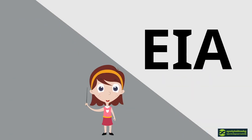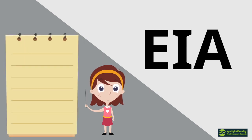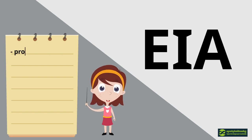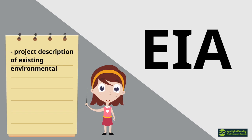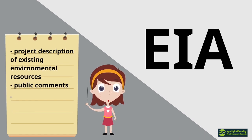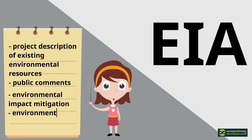In a PRACAS issued by the Ministry of Environment, the contents of a full EIA are specified. Among other requirements, an EIA should include a full project description of existing environmental resources, any public comments, environmental impact mitigation measures, and an environment management plan.